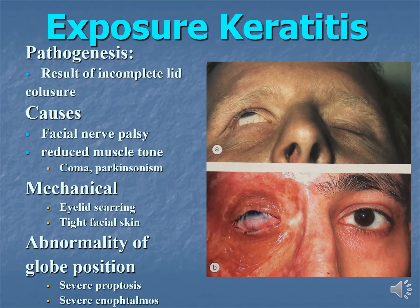Now we will discuss exposure keratitis. The pathogenesis is due to incomplete lid closure. Causes may be facial neuropalsy, reduced muscle tone as in comatose patients and Parkinsonism. There may be mechanical causes like eyelid scarring or tight facial skin. Or it may be due to abnormality of globe position, as in severe proptosis, exophthalmos, or severe enophthalmos.